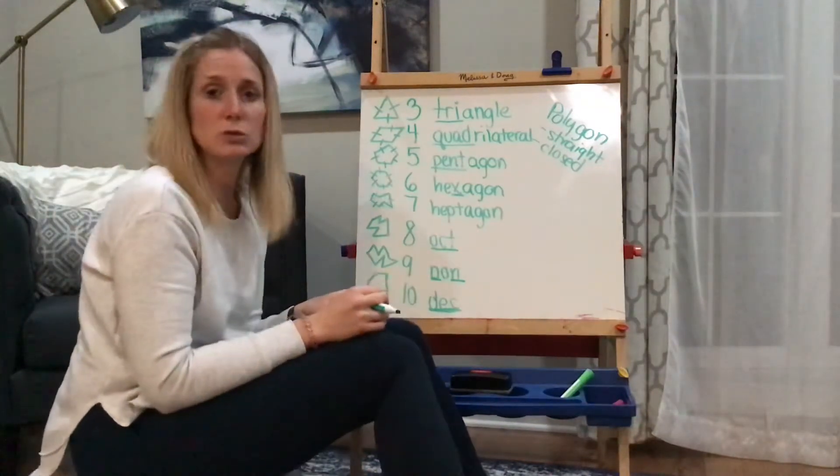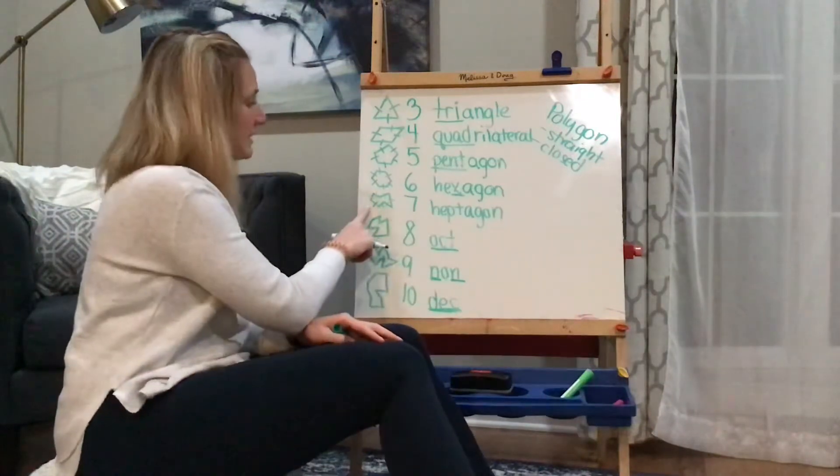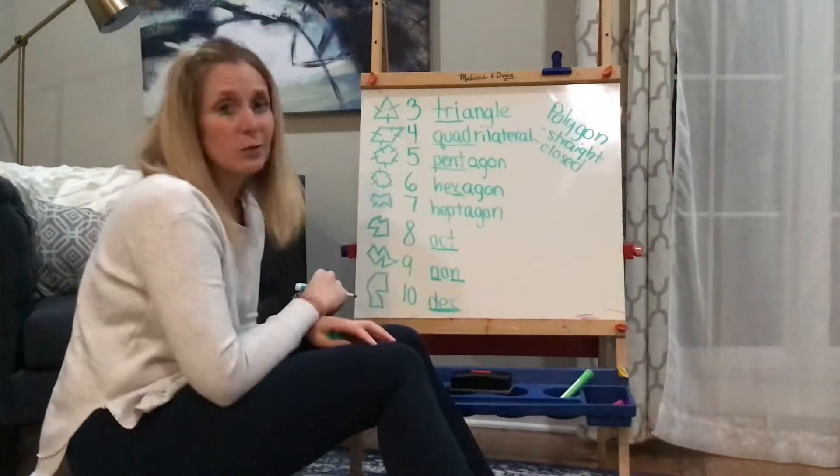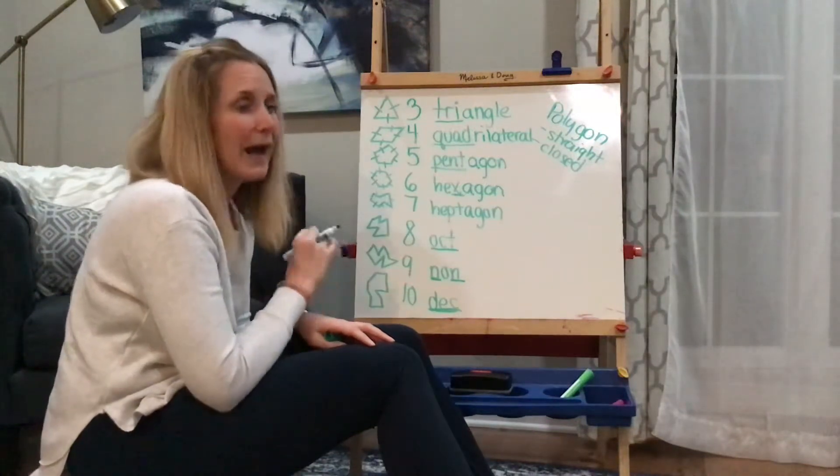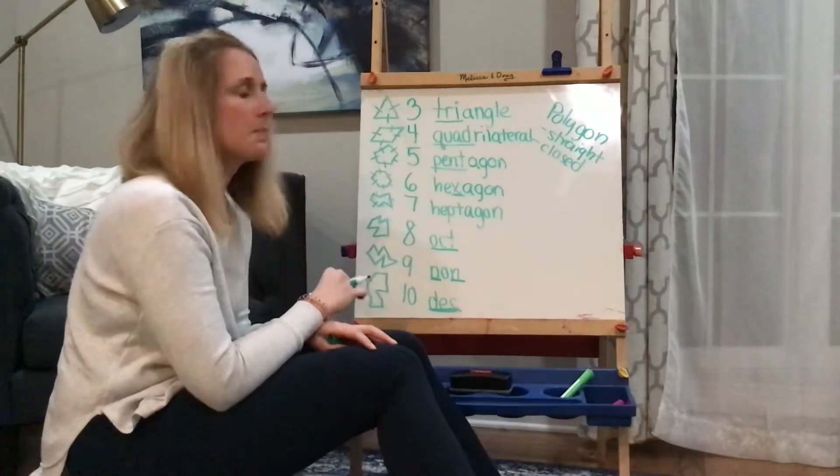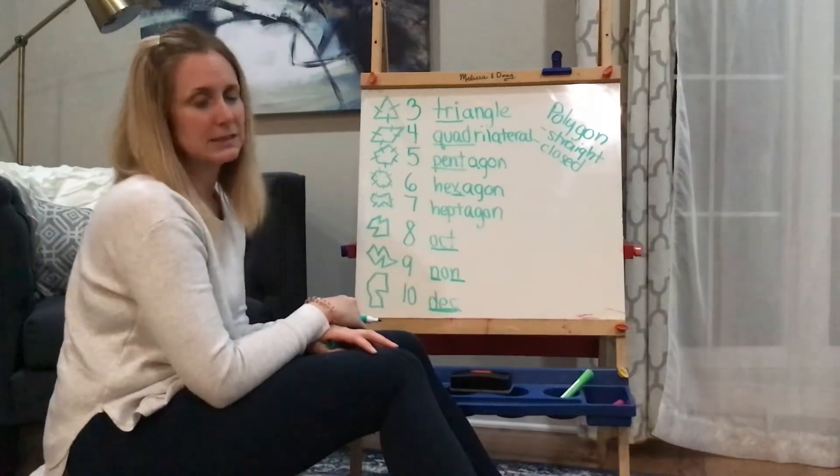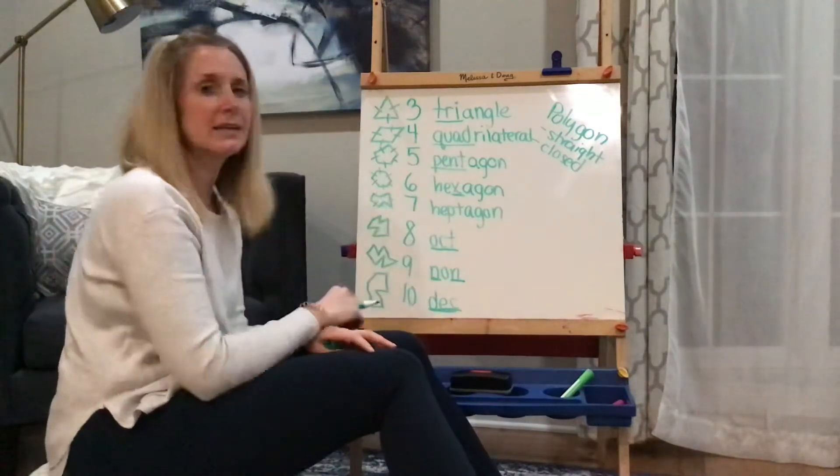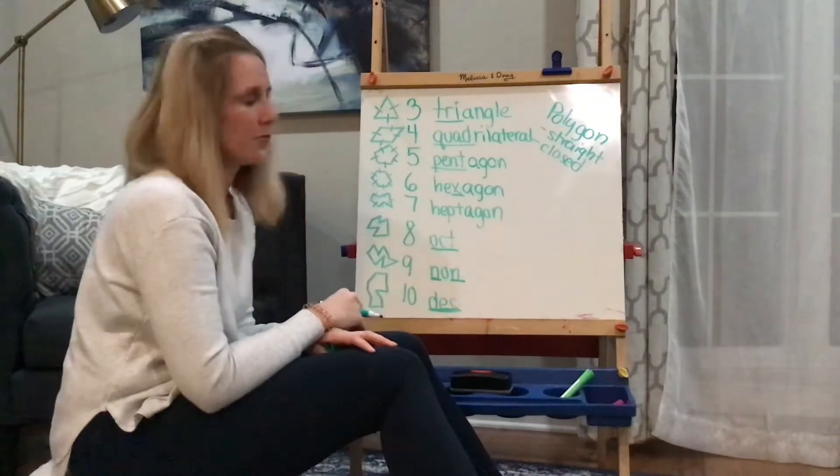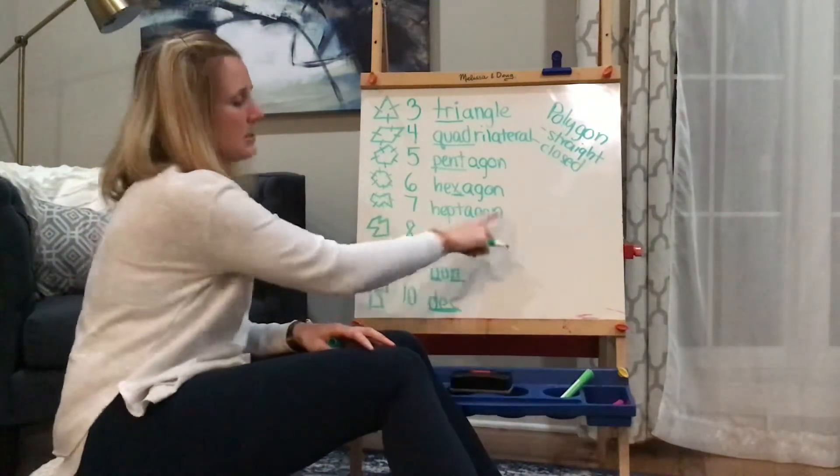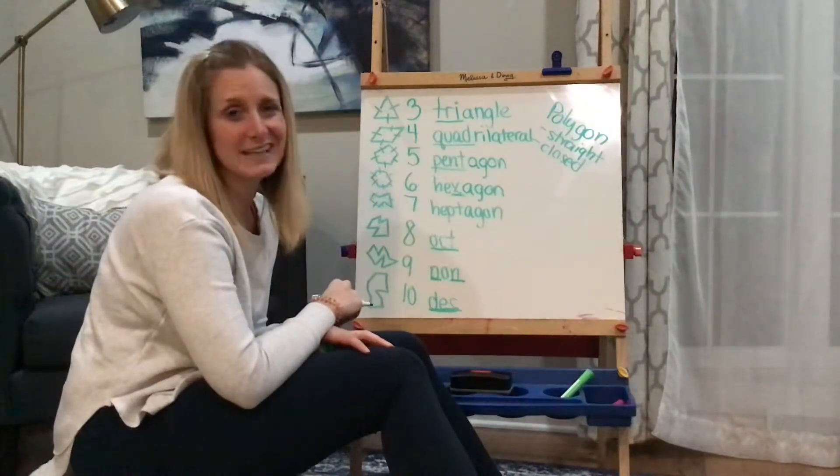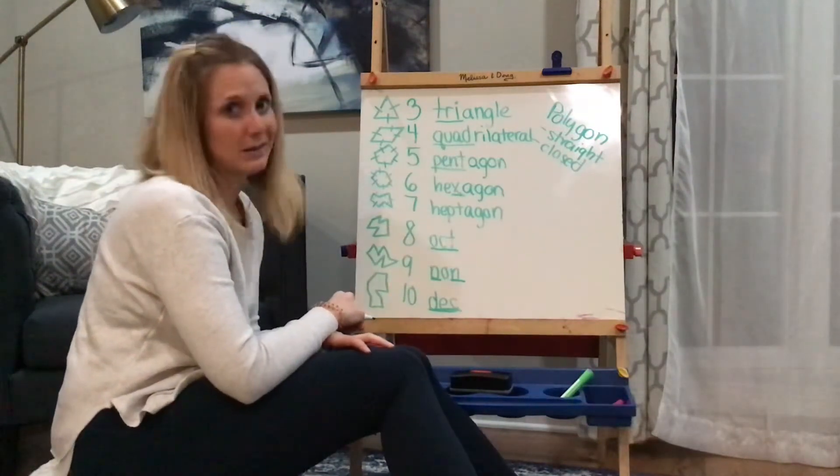So this is seven sides. I really don't have anything to help you remember this because you don't have to know this one in third grade, but I like to introduce it just maybe it sticks in your brain. Maybe you'll remember it for fourth or fifth grade, but a seven-sided figure is a heptagon. Seven sides, heptagon. I don't have anything really clever for that one.